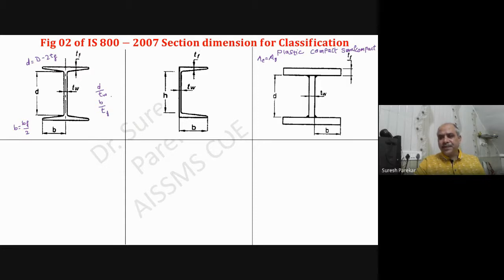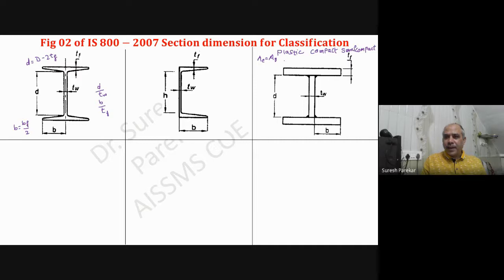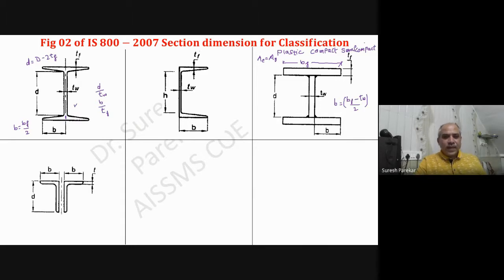For the welded plate girder we have d, tf, tw, and b. Here b equals bf minus tw by 2. This is measured from the face of the web, whereas the I-section b is from the center of the web - that is the major difference between the I-section and the welded section.